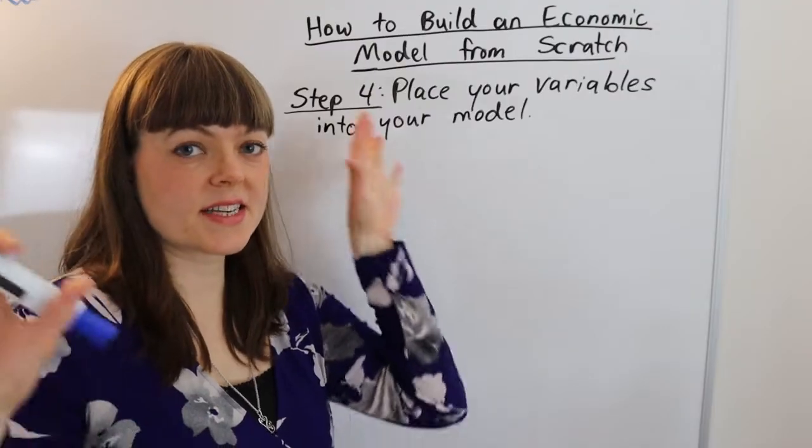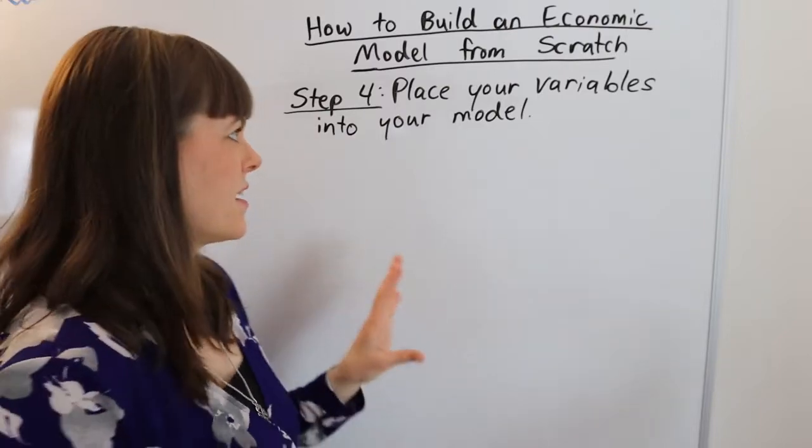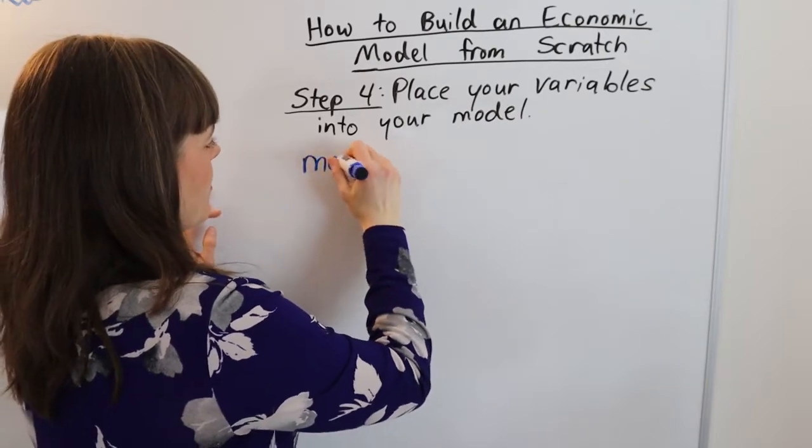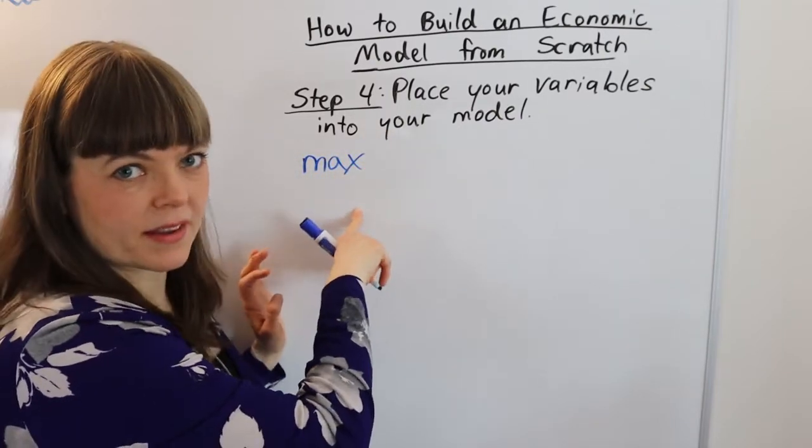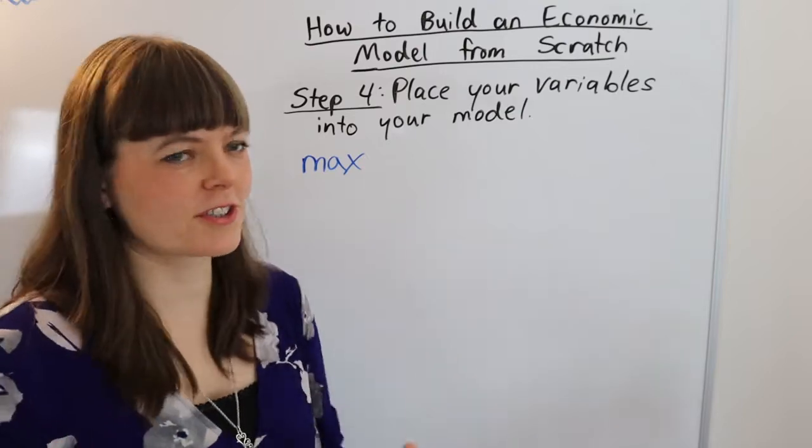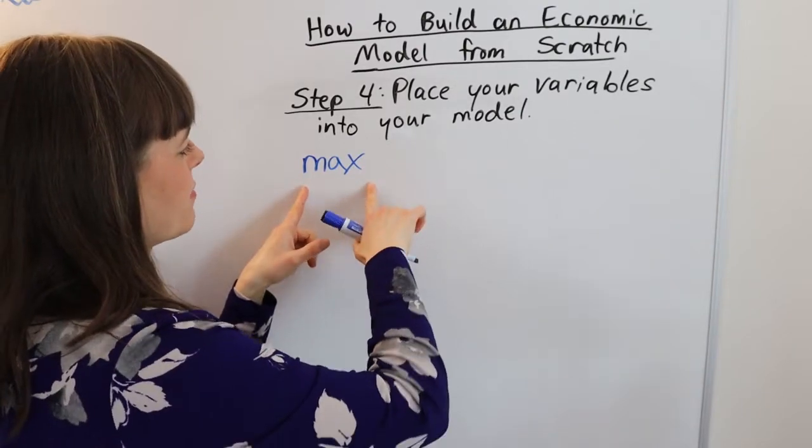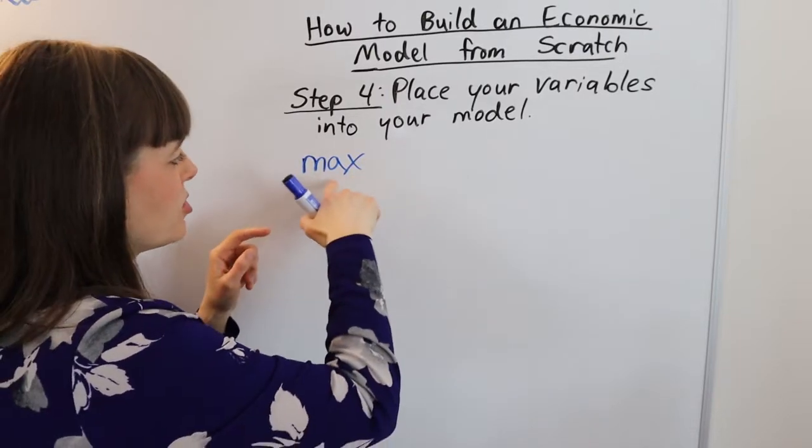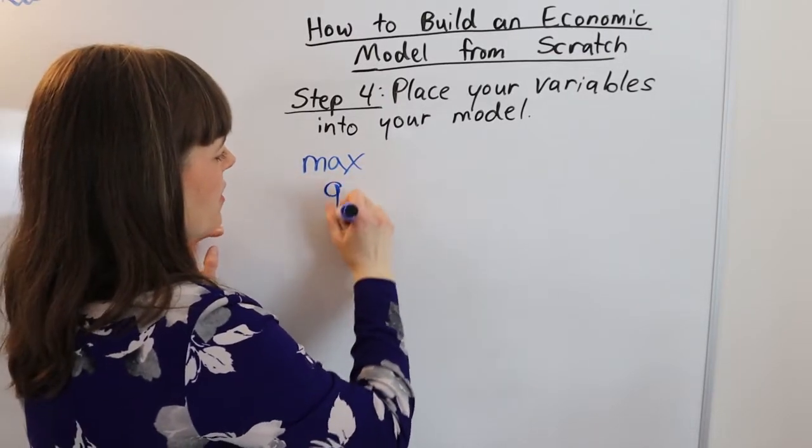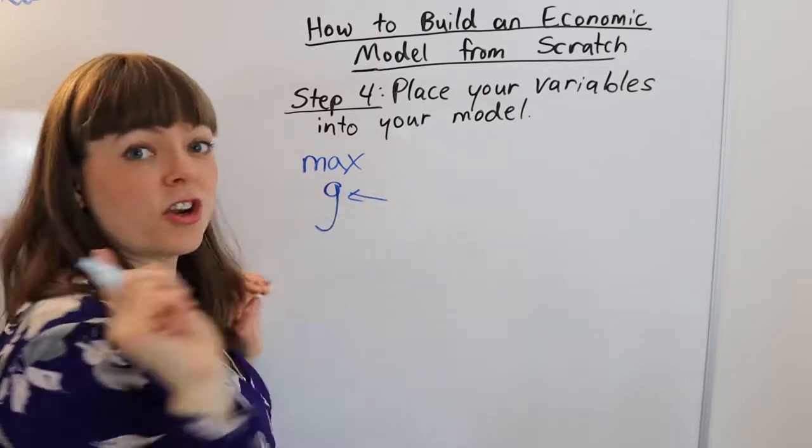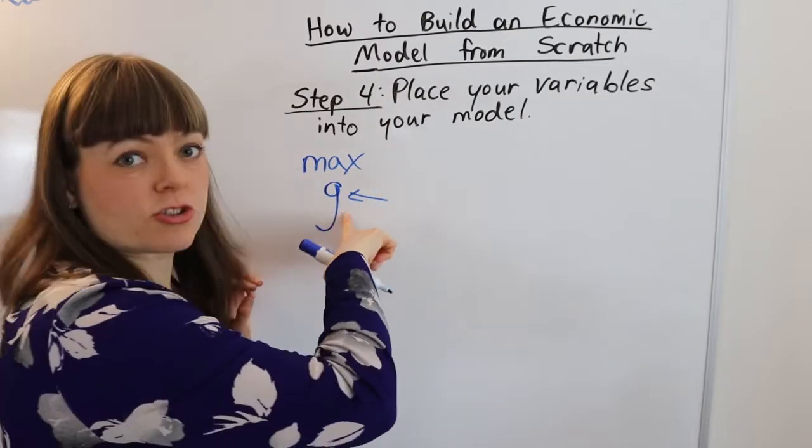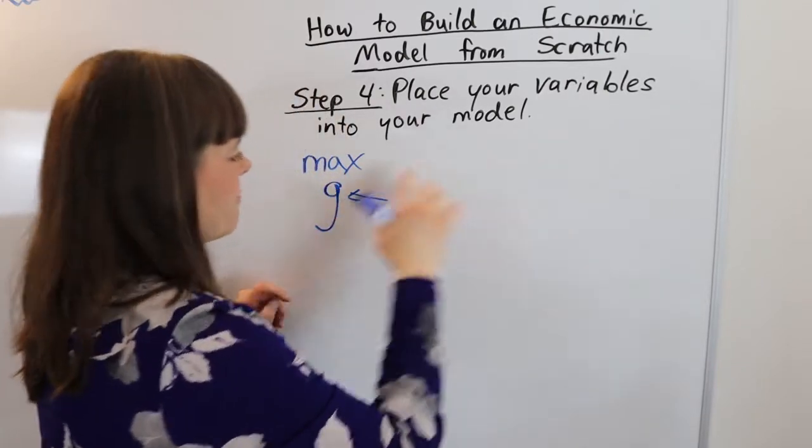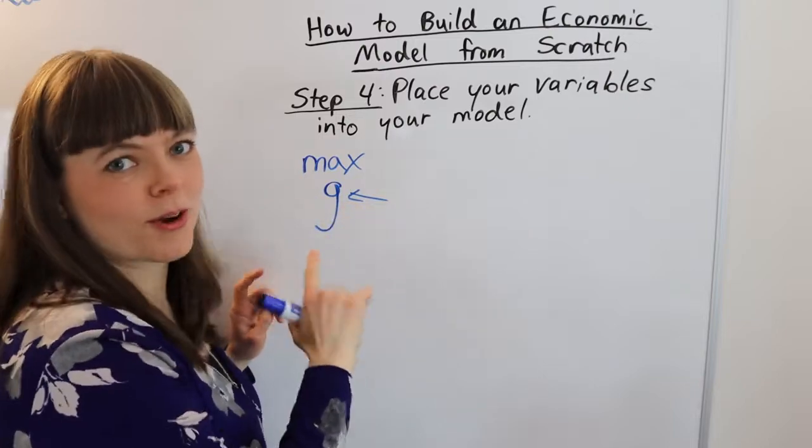The next step is to take the variables that you've already defined and to place them into a model. So you know that models are going to involve maximizing something, or sometimes minimizing something, but when you're first starting, just have it be maximizing something. What is the thing that you're choosing when you maximize? Well, you choose your choice variable. So that goes underneath the maximization sign, noting that you're not maximizing your choice variable. That's not ever what you do. You maximize your objective function, but you define your choice variable, which I will do now.